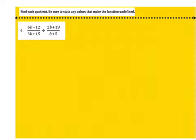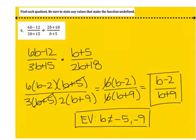Number 4: go ahead and pause the video and try this one on your own. It's exactly like number 3 — don't forget our first step: when dividing, flip the second one and then multiply straight across. Pause the video, try it, and then come back and check your answer. When I went through and simplified, I got (b minus 2) over (b plus 9), with excluded values of b cannot equal negative 5 and negative 9. If you didn't get that same answer, please come chat with me before moving on.